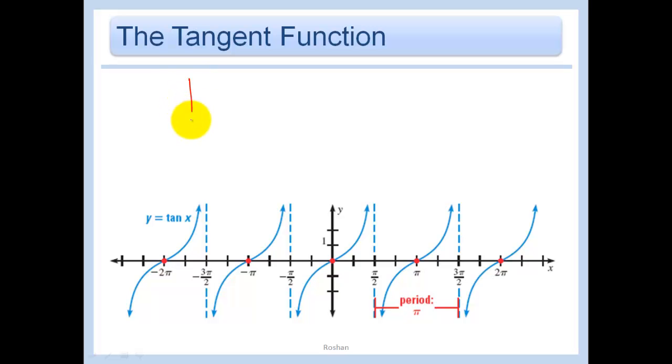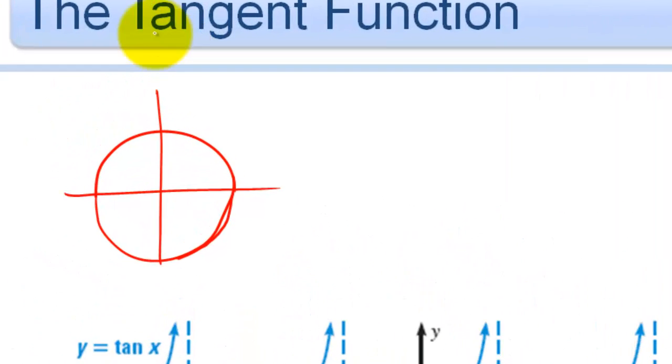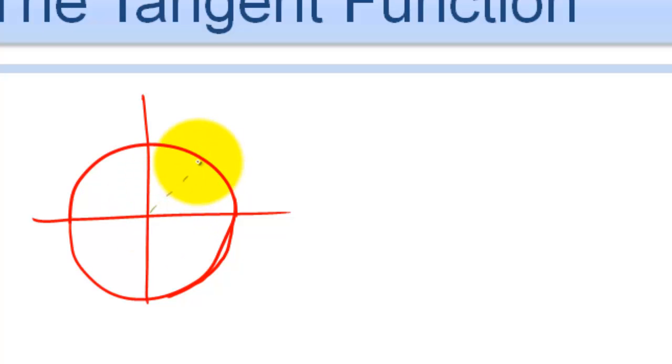So to graph the tangent function, you better bet we are going to start once again with our unit circle. Now when I fill out this unit circle, I'm going to put a little bit more information in, because remember that tangent, if I plop in my little triangle here, tangent was defined as opposite over adjacent.